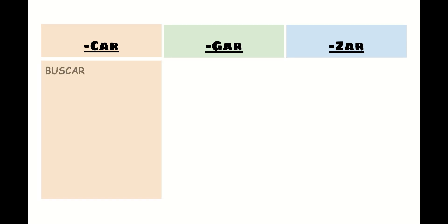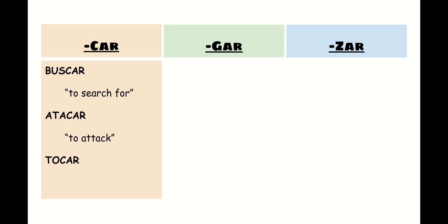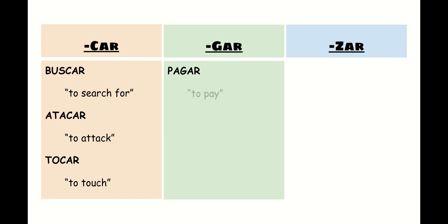Some examples of verbs that end in -car would be buscar, which means to search for; atacar, which means to attack; and tocar, which means to touch. Some examples of verbs that end in -gar are verbs like pagar, which means to pay; llegar, which means to arrive; and jugar, which means to play.